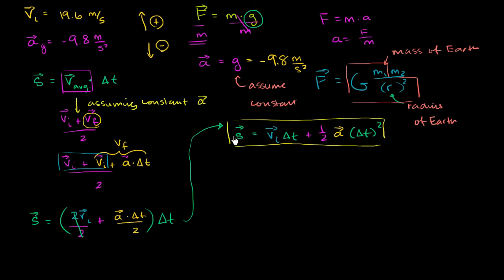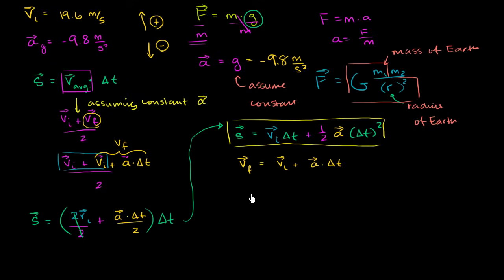We know our displacement as a function of time and our final velocity as a function of time. Our final velocity is our initial velocity plus our acceleration times change in time. This tells you how much faster or slower you'll go than your initial velocity. Our acceleration due to gravity is negative 9.8 meters per second squared — negative being the convention for the downward direction. Our initial velocity is 19.6 meters per second in the upward direction.